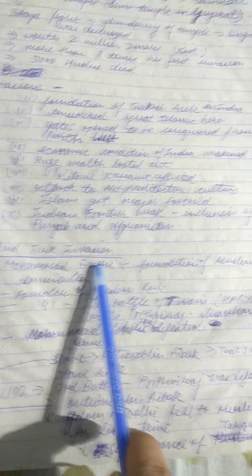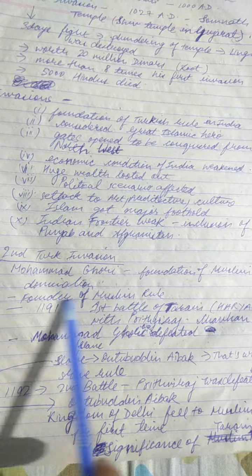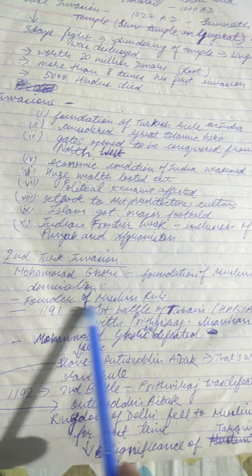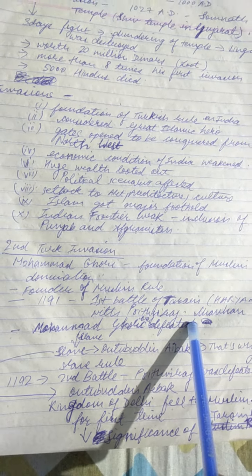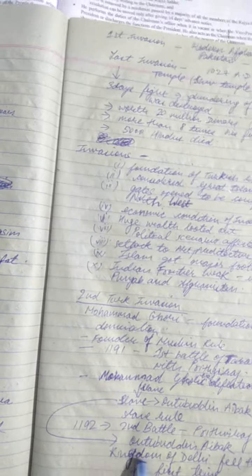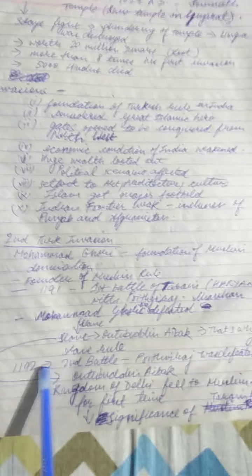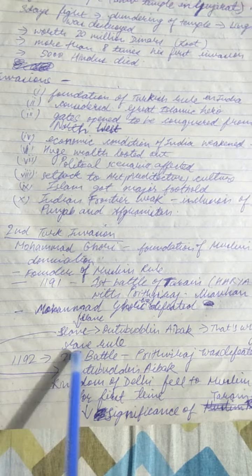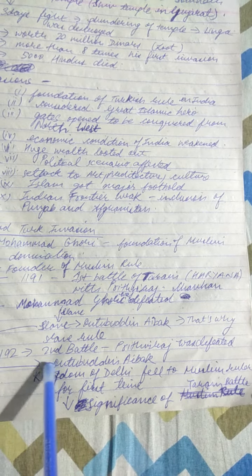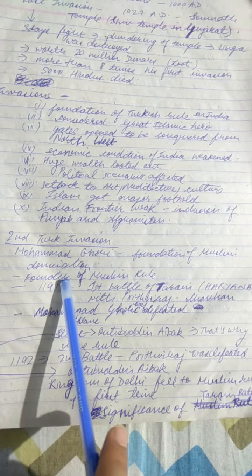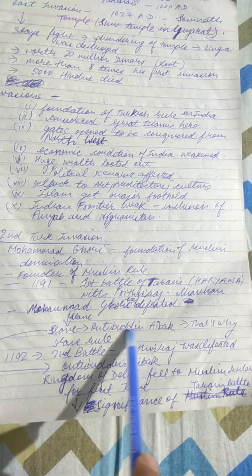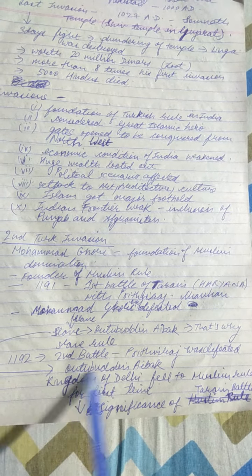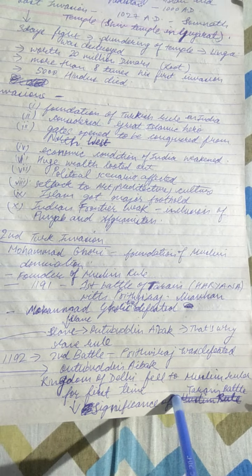Now we will look at the second Turkish invasion, done by Mohammed Ghori. This laid the foundation of Muslim domination in India — he was the founder of Muslim rule in India. In 1191, the first Battle of Tarain took place in Haryana with Prithviraj Chauhan, and Mohammed Ghori was defeated. But in 1192 he returned, defeated Prithviraj Chauhan, and established his slave Qutb ud-Din Aibak as ruler — that is why it is known as the Slave dynasty. The kingdom of Delhi fell to a Muslim ruler for the first time.